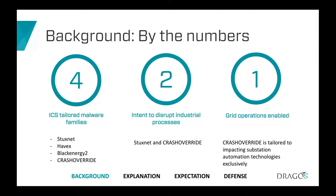Why is Crash Override unique and interesting? It is really just the fourth ever known malware family to have any sort of ICS-tailored components. The first being Stuxnet, then Havex and BlackEnergy 2, and now Crash Override. This very small pool is noteworthy, but we can distill it further: Crash Override is really the second malware family to have not only industrial process capability but the intent and capability to actually disrupt industrial processes.